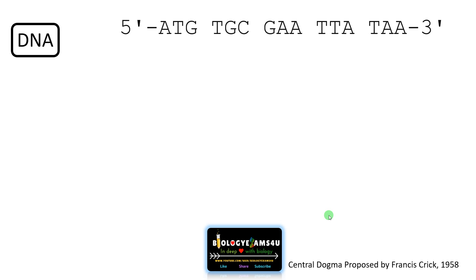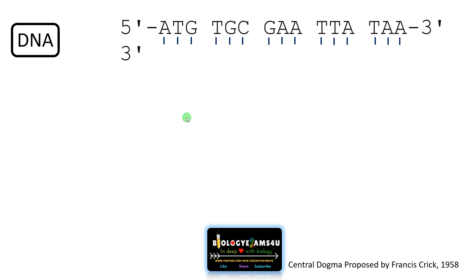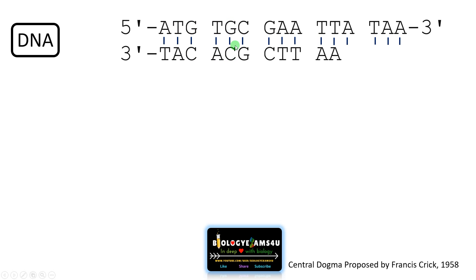This is also called Chargaff's rule. Adenine always pairs with thymine and guanine always pairs with cytosine. So let us write down the complementary strand. It will be ATTAGCTAGCCG like that.